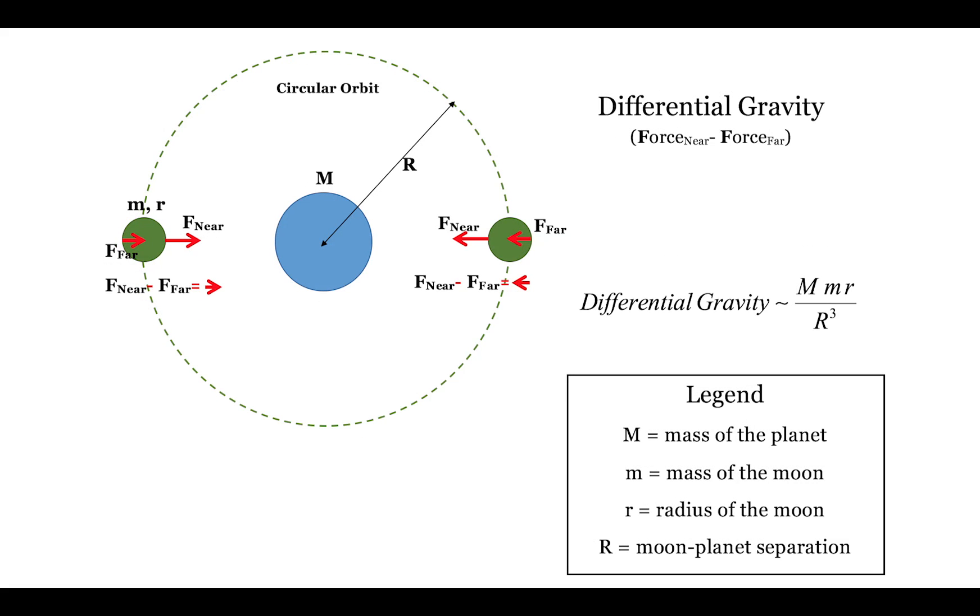Here we depict a moon in a circular orbit about a planet. Although differential gravity is present, it is always the same, as all of the four quantities involved are the same. The planet's gravitational pull on the near side is always a little stronger than that on the far side, at every point in the orbit.